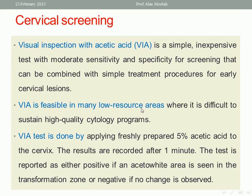Regarding visual inspection with acetic acid (VIA): we apply 5% acetic acid over the active cervix — the transformation zone. If there is an aceto-white area in the transformation zone, this is considered positive; if not, it is negative. It is helpful in low-resource countries when the Pap test or HPV test is not available, as it is very cheap, available, and can be done easily.